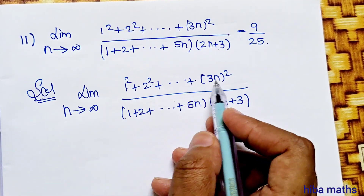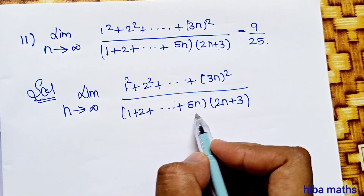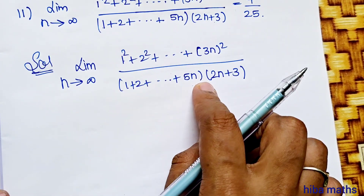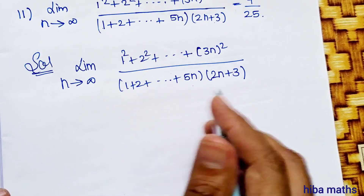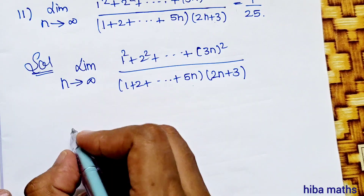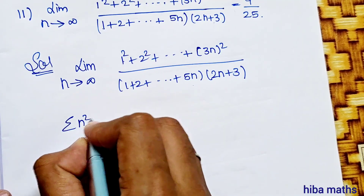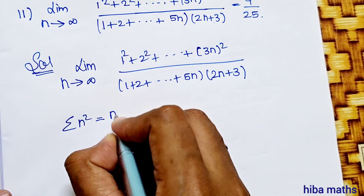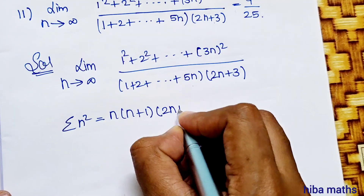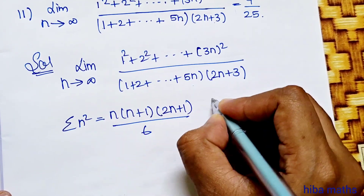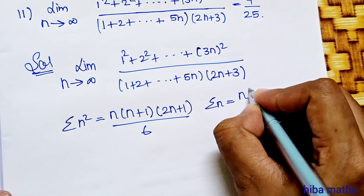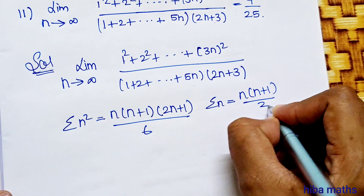Now, we have two parts. The sum of squares formula: summation of n squared equals n(n+1)(2n+1) by 6. And the sum of natural numbers formula: summation of n equals n(n+1) by 2.